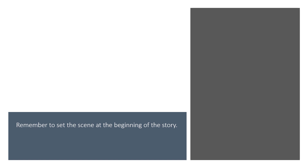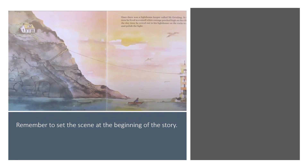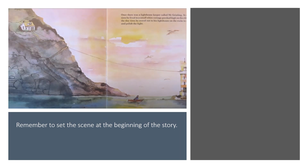Now remember when you tell a story it's really important to set the scene. So you need to talk about where the story is happening. At the beginning of the lighthouse keeper book there's a little bit about where it is. You did a bit of this at the beginning of the week — you described the different parts of this picture. So today I'd like you to set the scene at the beginning of your story.